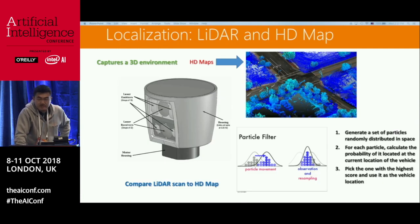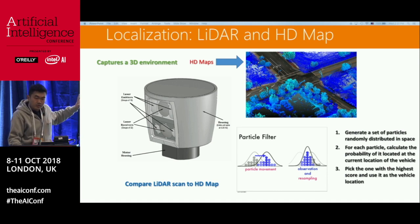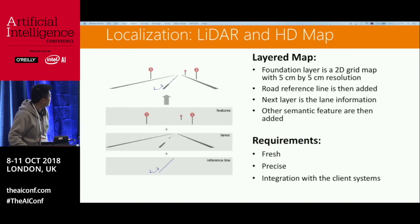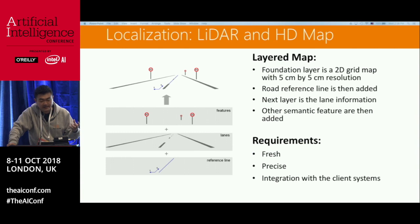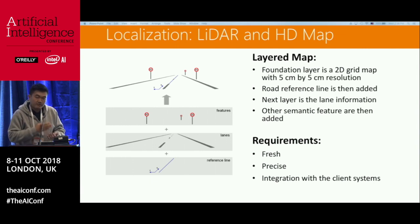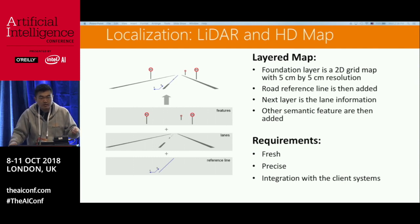There's also an expensive way to do localization: use LiDAR, a very expensive sensor — $80,000 US dollars for a 64-line LiDAR. But the most expensive part is the HD map. To maintain a map for a city like Mountain View or Santa Clara, it costs millions of dollars per city. Why is it so expensive? You use very high-end sensors to capture data, you have to build semantic information on top of that, and you have to refresh the map weekly.